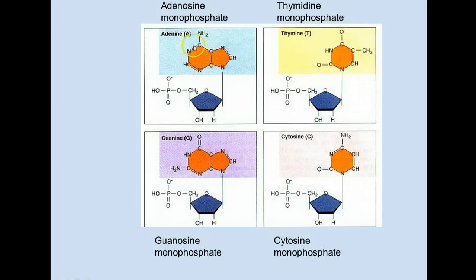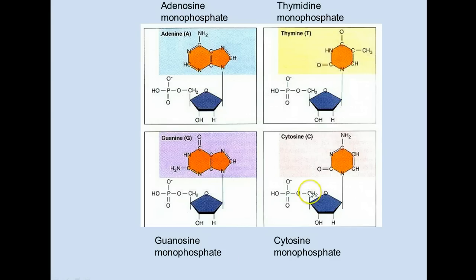In this slide, you can see almost all of the atoms drawn out in the base, the sugar, and the phosphate. For some reason the artist left out the carbons on the sugar, so we just see the shape of the sugar without the carbons — except for the number five carbon. This is the five-prime carbon, and the phosphate is always attached to the five-prime carbon of the sugar. These are all the deoxynucleotide monophosphates.